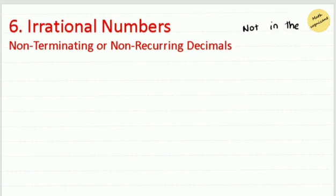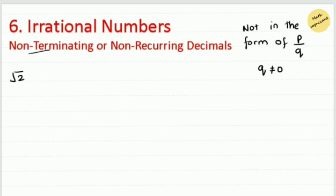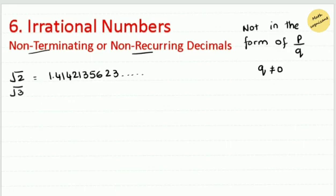The next topic is irrational numbers — those numbers which cannot be written in the form P over Q, that is, as a fraction. Irrational numbers are non-terminating and non-recurring (non-repeating) decimals. For example, √2 = 1.41421356... — it goes on and never stops or repeats.